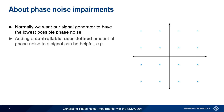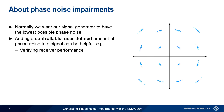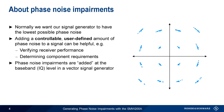However, there are cases when adding a controllable, user-defined amount of phase noise to our test signals is helpful or necessary. For example, if we want to verify that our receiver can correctly demodulate signals in the presence of varying degrees of phase noise. Likewise, we might want to determine whether an oscillator with a specified phase noise performance would still produce acceptable results as part of a larger system. Modern vector signal generators, such as the Rohde & Schwarz SMW-200A, make it possible to perform these kinds of tests by adding controllable, user-defined phase noise impairments to the generated signals.